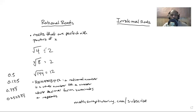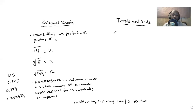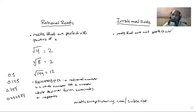Now let's compare, because it's always good to learn about something by learning about the opposite of it. An irrational root — or irrational roots — are roots that are NOT perfect nth powers of x.